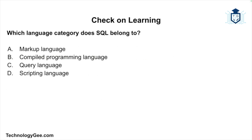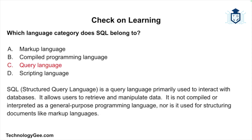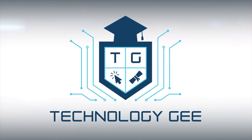Question three: which language category does SQL belong to — a markup language, a compiled programming language, a query language, or a scripting language? The correct answer is it is a query language. SQL is a query language primarily used to interact with databases, allowing users to retrieve and manipulate data. It is not compiled or interpreted as a general purpose programming language, nor is it used for structuring documents like markup languages.